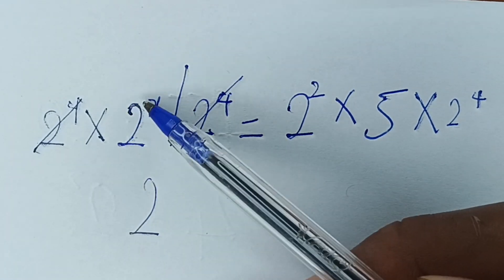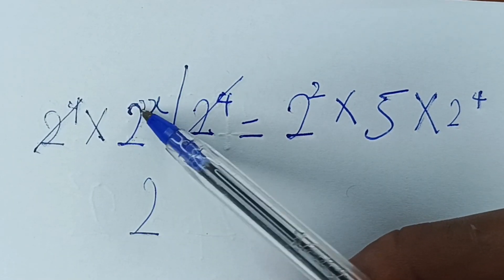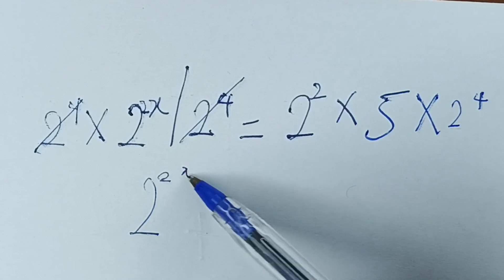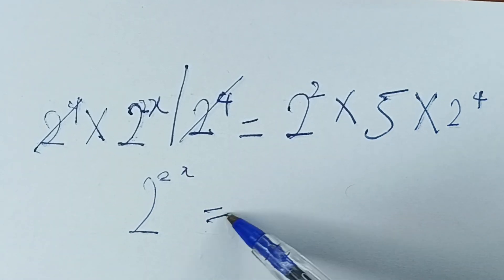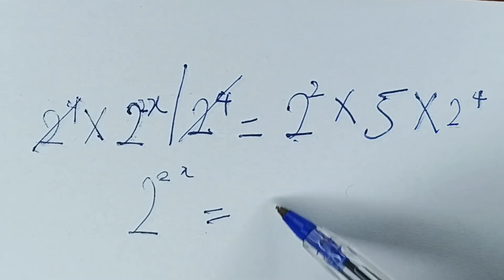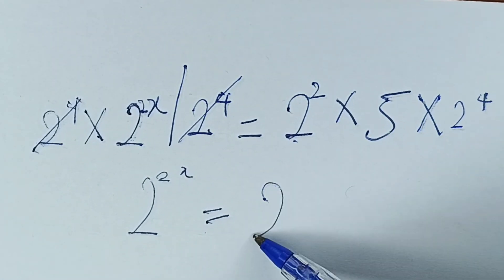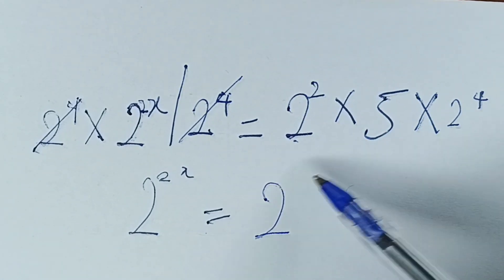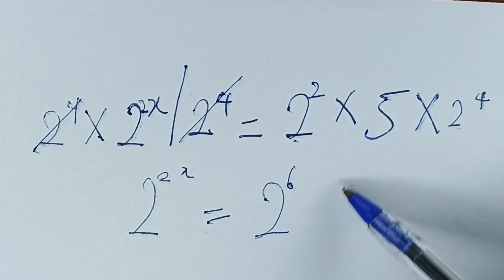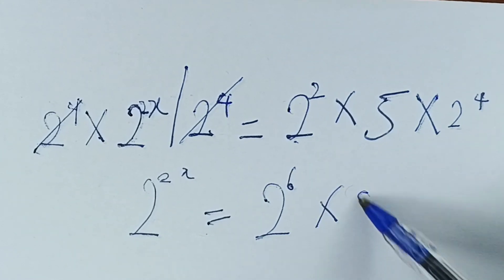So we have 2 raised to power 2x equal to 2 raised to power 2 times 2 raised to power 4, which is 2 raised to power 2 plus 4, giving us 2 raised to power 6, times 5.